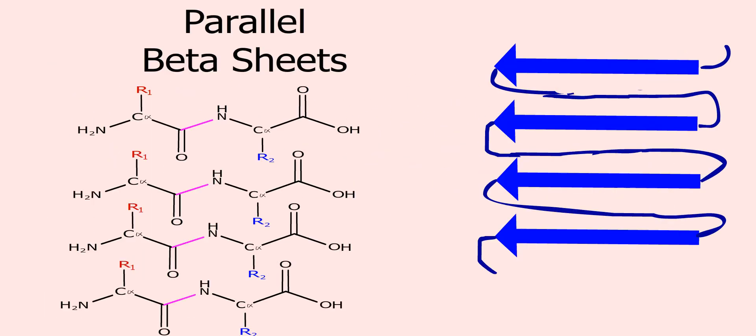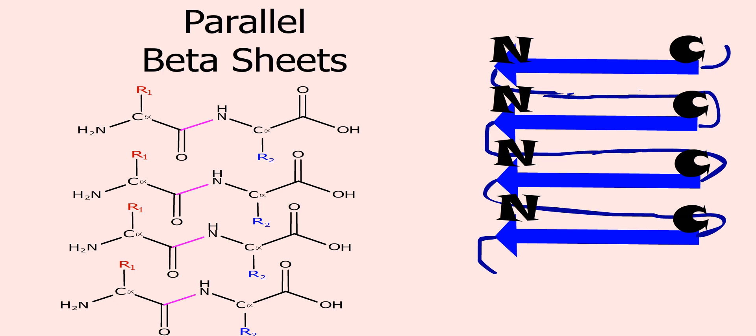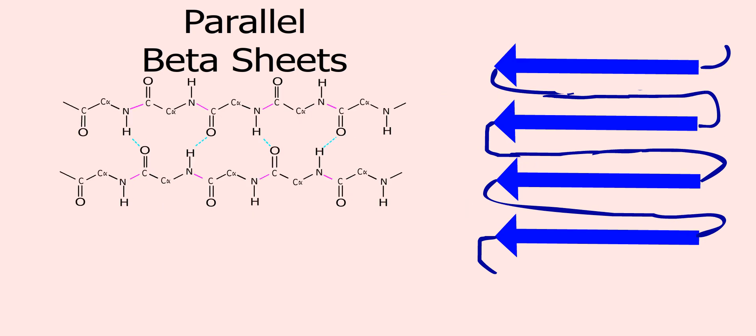In the parallel beta sheets, the polypeptide chains are oriented in the same direction. The way in which hydrogen bonding between amino and carbonyl groups is strained due to a lack of direct interaction.